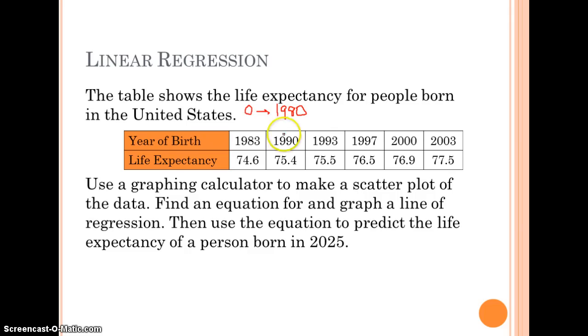If 1980 is our 0 year, 1983 would be 3, 1990 would be 10, and then 13, 17, 20, 23. Now it's more manageable to plug into our calculator.